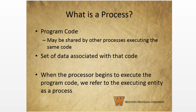Now a process has two absolutely essential pieces: the program code, which could be shared by other processes that are executing the same code, and a set of data associated with that code. We at the minimum need those two pieces to have a process. Now when the processor begins executing that program code, we refer to the executing entity as a process.